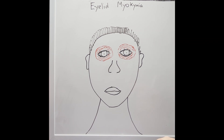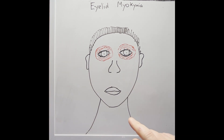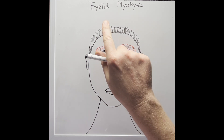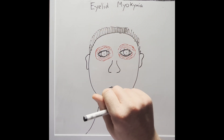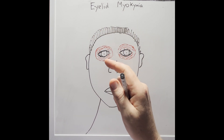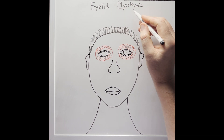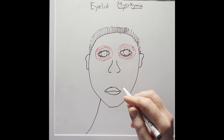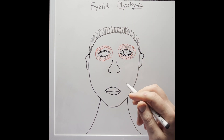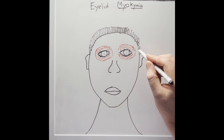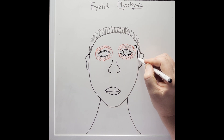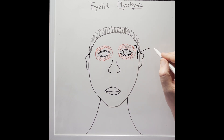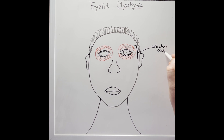Why do I get these random eye twitches and how do I get rid of them? These eye twitches are known as eyelid myokymia, which comes from a Greek word meaning myo — muscle — and chymos — wave. These muscle waves are caused by involuntary contractions of the muscles around the eyes, known as the orbicularis oculi.